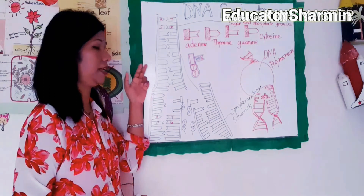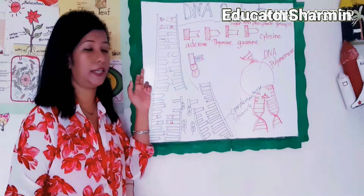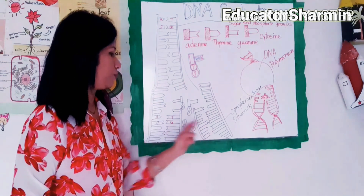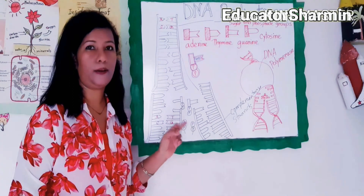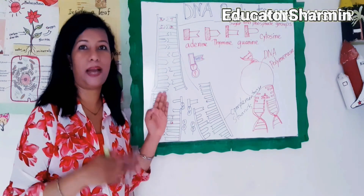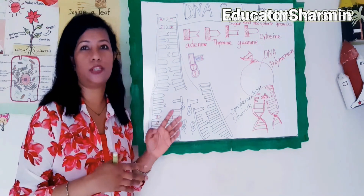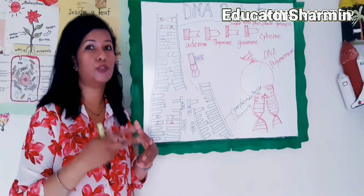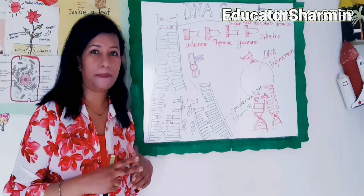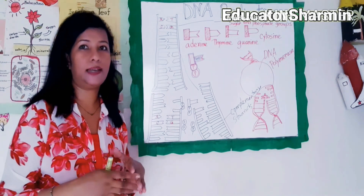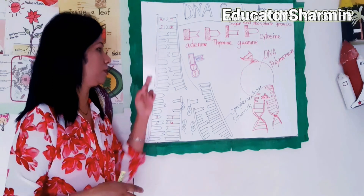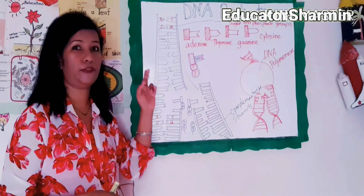The original DNA produces two new DNA molecules here. DNA replication is the biological process of producing two identical replicants of DNA from the original molecule.